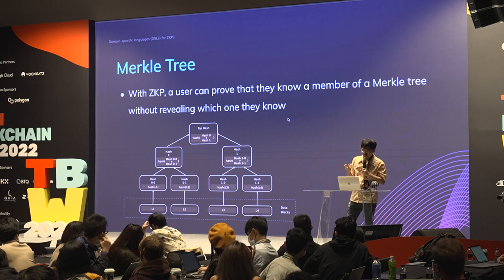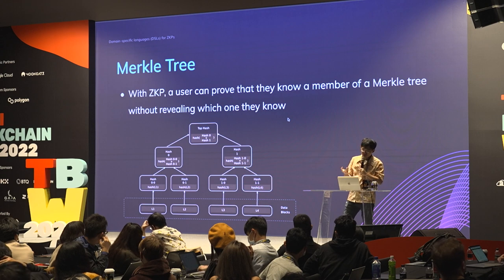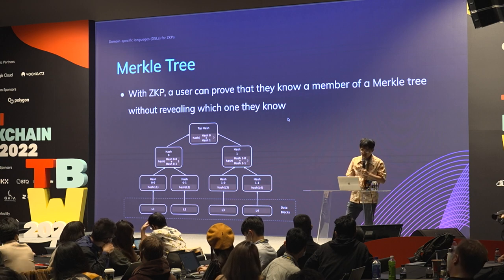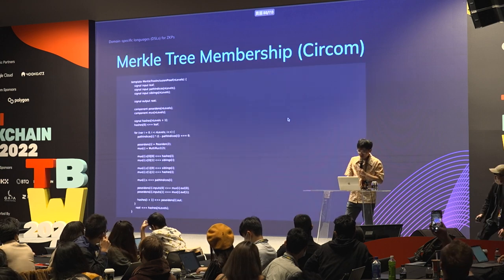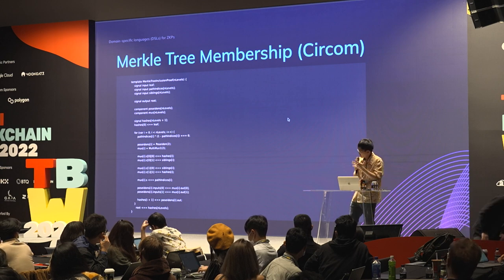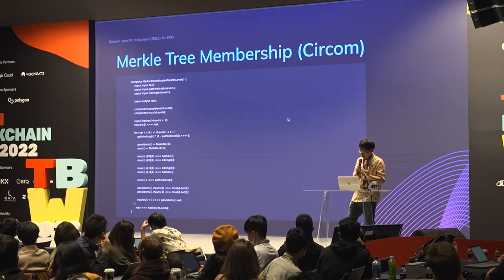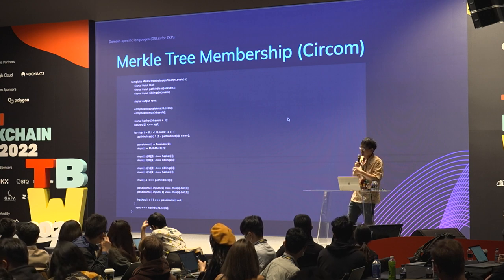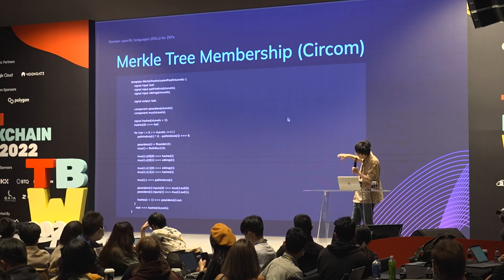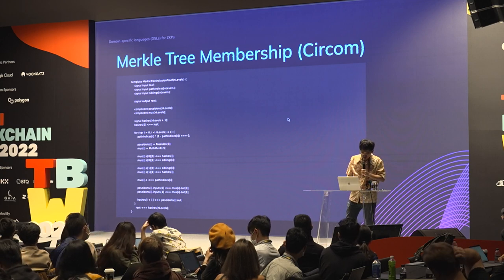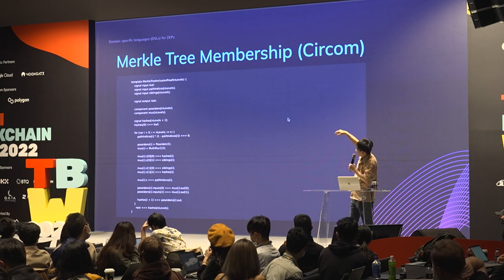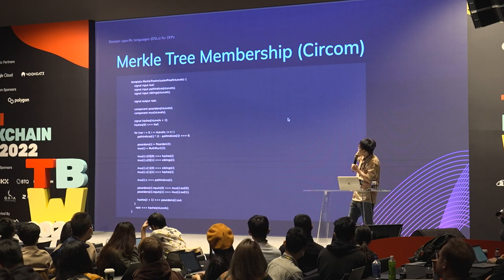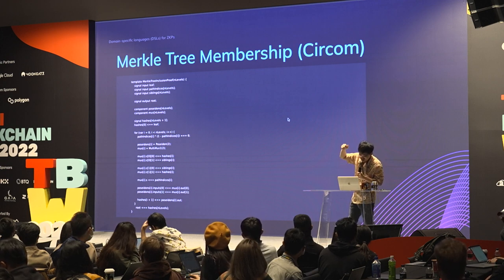The user can prove Merkle tree membership without revealing which member they know, because publicly everyone just knows the root. Here's an example of how you write a proof of Merkle tree membership in Circom — the code asks users to provide a leaf that is a member of the tree and a path from that leaf to the root.